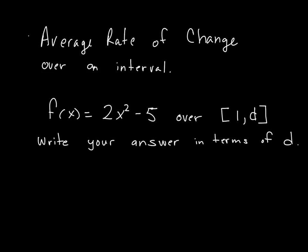We're going to talk about average rate of change today. When we're talking about average rate of change over an interval, that means we're going from the interval from 1 to d. We're starting with a number but ending with an unknown, which in this case is d.